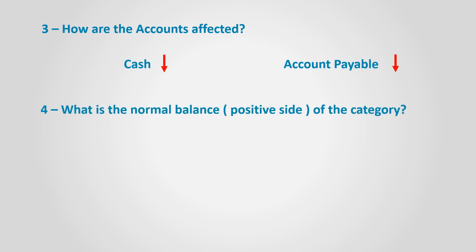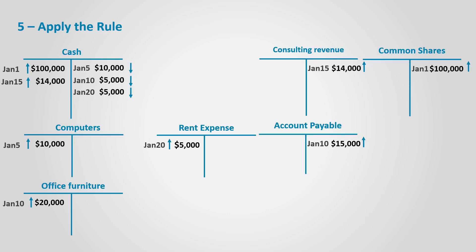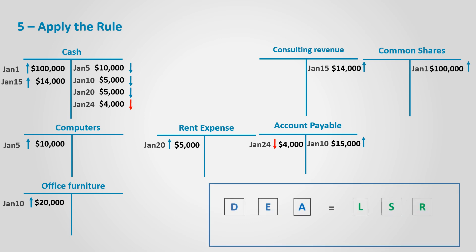What is the normal balance — the positive side of the category in which the account falls? The assets category has a normal debit balance and liabilities has a normal credit balance. Let's apply the rule: cash falls in the assets category whose normal balance is debit and it decreases, so $4,000 is recorded in the credit side. Accounts payable falls in the liabilities category and it decreased, so $4,000 is recorded in the opposite side of its normal balance, which is the debit side. Notice the overall effect: assets decreased by $4,000 in the form of cash, and liabilities decreased by $4,000 in the form of accounts payable, so both sides balance.